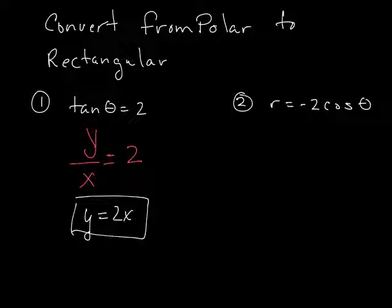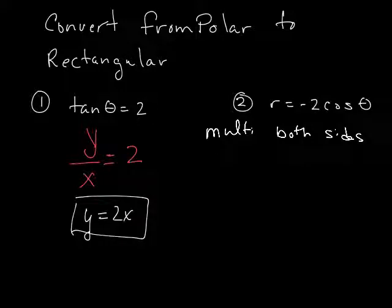You want to multiply both sides by R. The reason I want to do that, well, more than that, I need to get back to here, correct? I need to get back to R cosine theta.